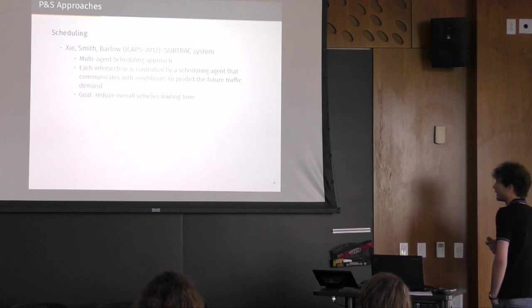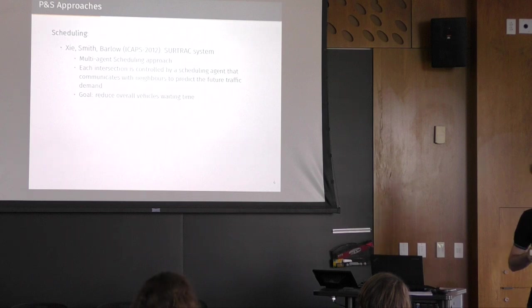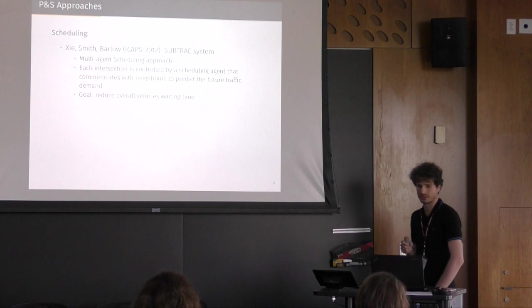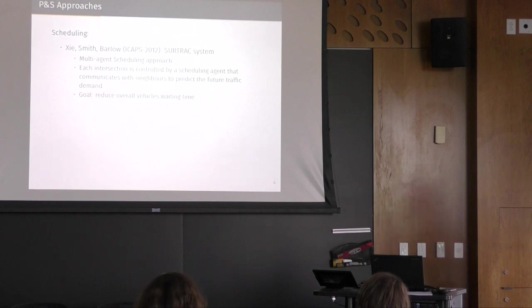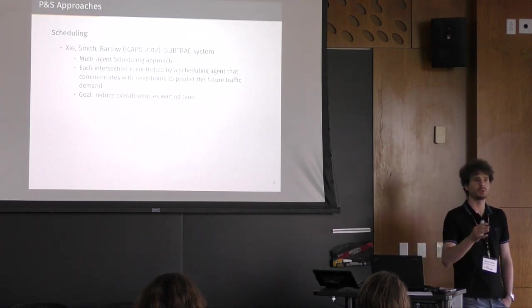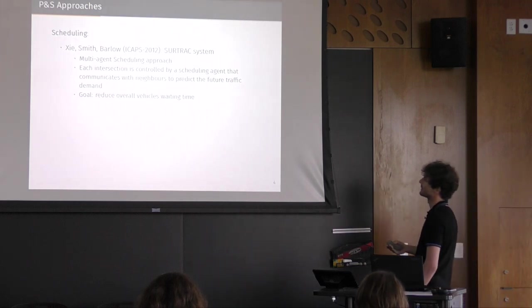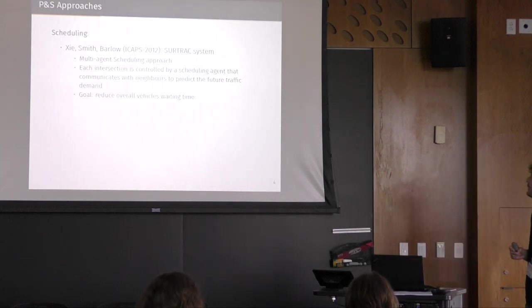And moving to planning and scheduling approaches, I think one of the most remarkable ones is SurTrack, which was basically proposed from this university, and which is actually in place, I think as a pilot study, in the northern area of Pittsburgh, for controlling 50 junctions together. And the idea here is to break down the problem in exploiting a multi-agent approach. So each junction is an agent, which can communicate with its neighbors for exchanging information about future traffic demands, and then each agent can fix or can improve its traffic light settings, with the goal to reduce the overall vehicle's waiting time.